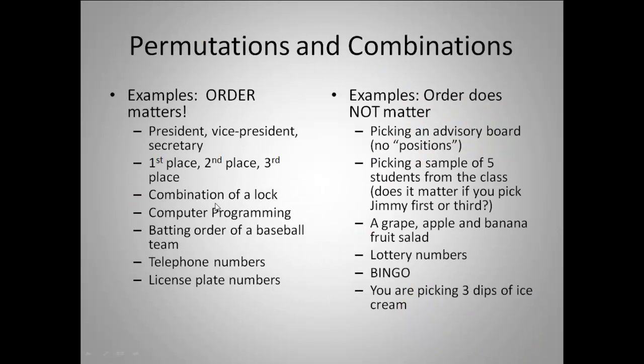Here's some examples to help clarify the difference. On the left, the order matters, so these are permutations. If you had assigned roles - president, vice president, secretary - let's say it was Joe and Mary and Mike. That would be very different than having Mike as the president and Joe as the secretary. Very different arrangement because they have specific titles, specific roles. That's different than if you're just picking an advisory board and there's no positions on it. If you had Mike, Mary, and Joe on the board, that's the same thing as having Joe, Mary, and Mike on the board because the order doesn't matter as long as they don't have particular roles.